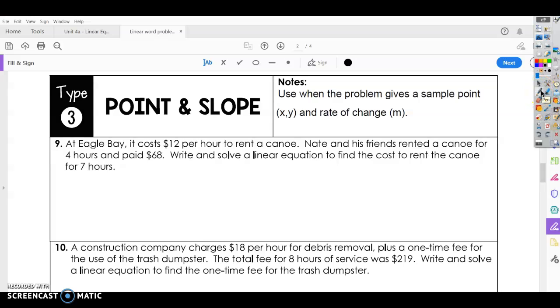We're continuing to talk about linear equations, looking at word problems, and this time we're going to look at point-slope form. Just a refresher, point-slope form: y minus y1 equals m times x minus x1. It's always good to know what the formula is that you're going to be working with.